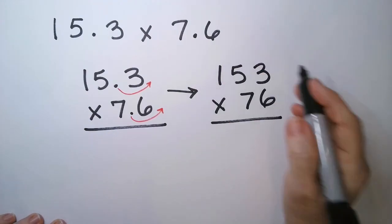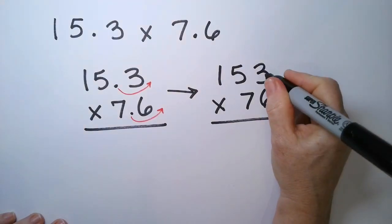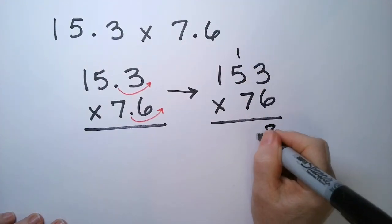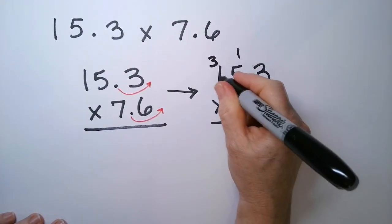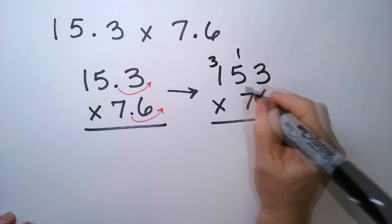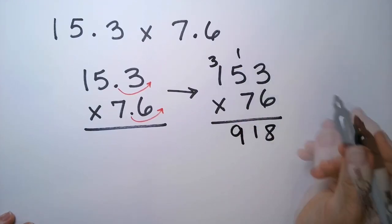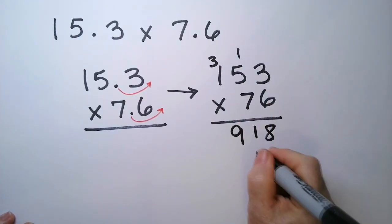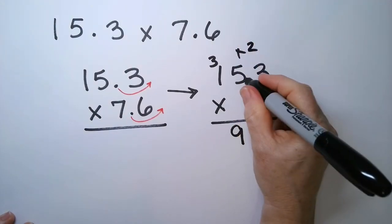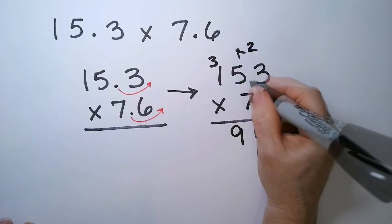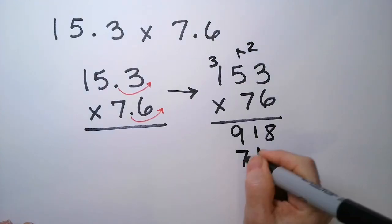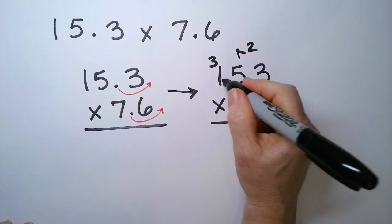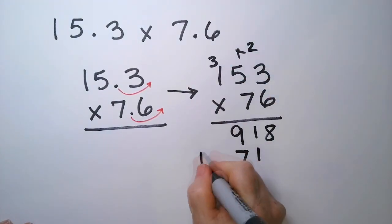So let's do this multiplication. So 3 times 6 is 18. Carry the 1. This is 31. Carry the 3. 1 times 6 is 6. Plus 3 is 9. 7 times 3 is 21. That's now a 2. 5 times 7 is 35, 36, 37. We still have a 3 to carry. 1 times 7 is 7. Plus 3 is 10.